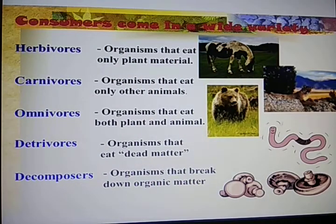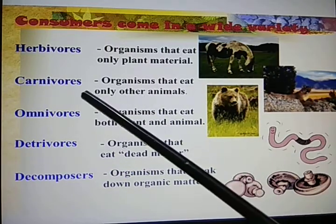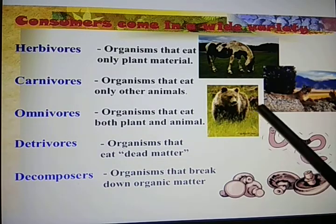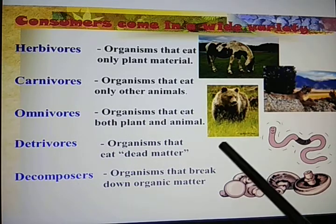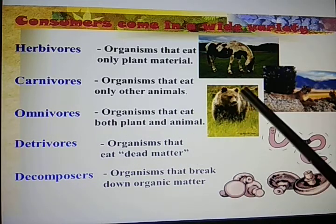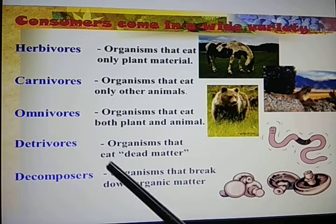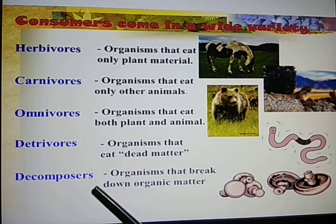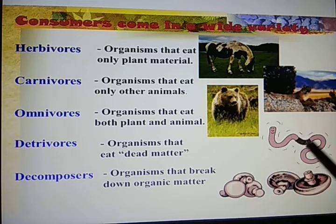We will see the general categories of consumers. Herbivores are all the plant eaters. Carnivores depend on other animals, like the lion and tiger. Omnivores such as humans eat both plants and animals, like wolf and bear. Detritivores depend on dead matter — they eat dead matter. And decomposers, which are saprophytic in nature, break down organic matter; these include fungi and bacteria.